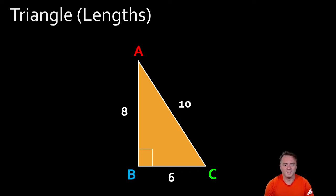Awesome so you should have found AC was equal to 10, BC was equal to 6, sorry AB was equal to 8 and last one BC was equal to 6. Cool.